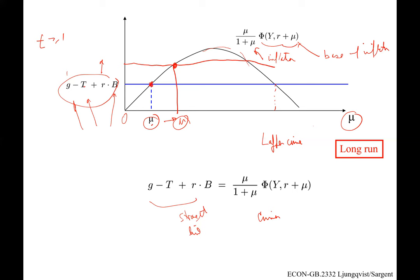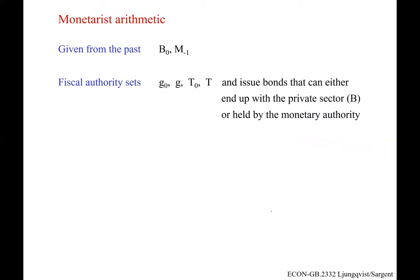Now we go beyond what Keynes was discussing in the classical doctrine to what my friend Neil Wallace and I called 'unpleasant monetarist arithmetic.' This will heavily emphasize the discrepancy between short run and long run.